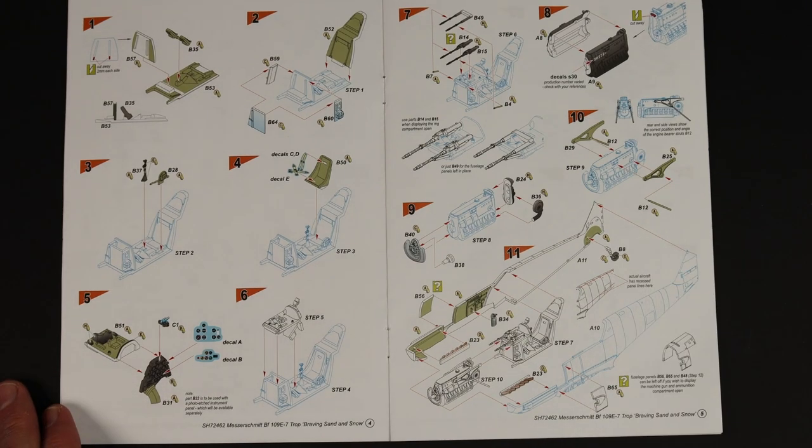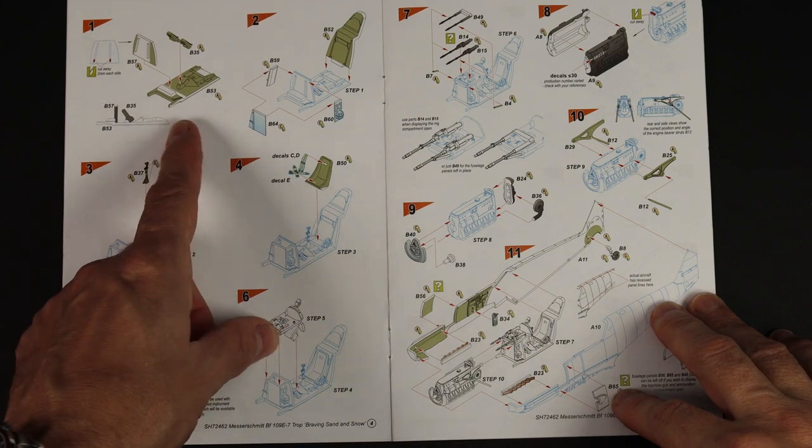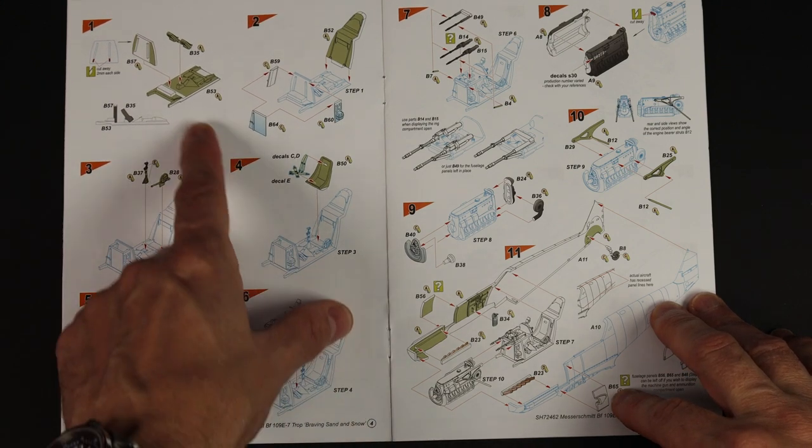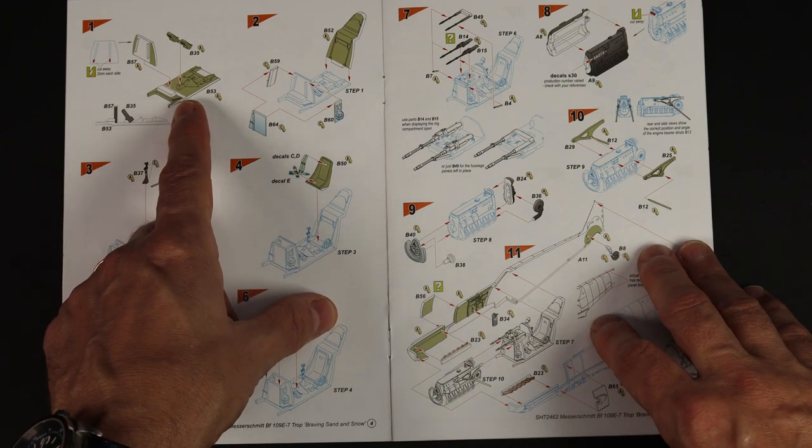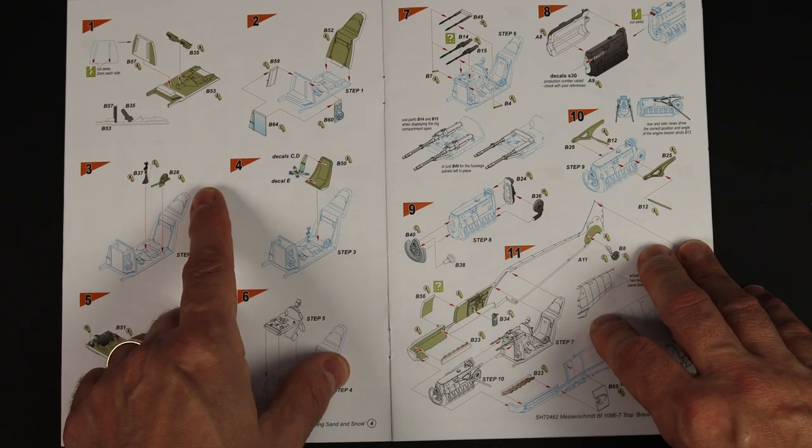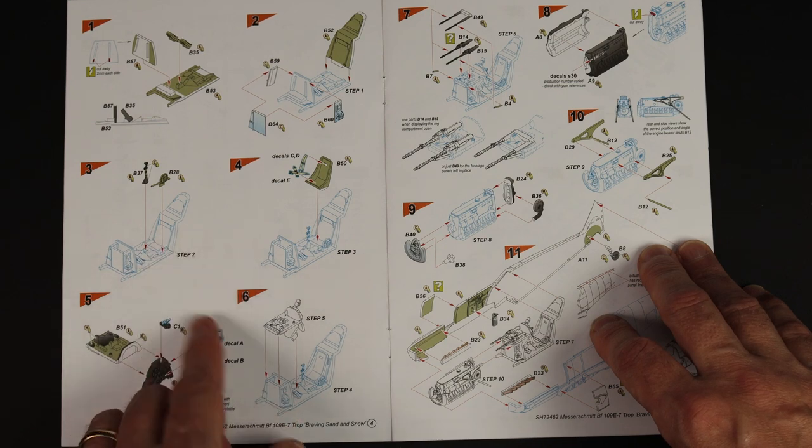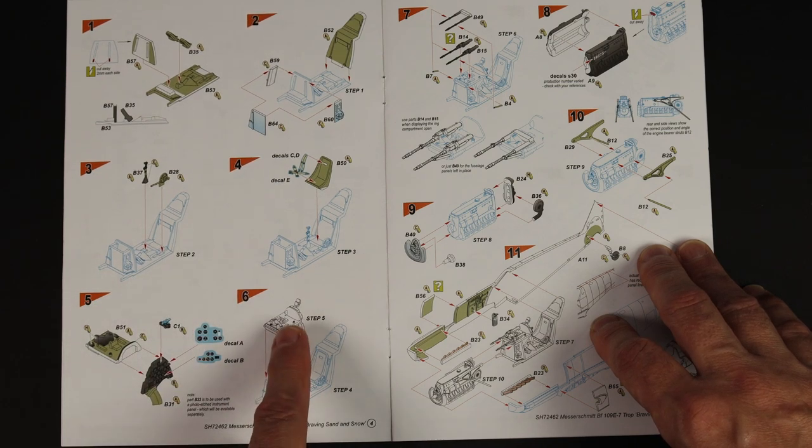Then straight into it. The first thing that strikes me are the color callouts. It's all printed in full color and I'm assuming these are the new bits. Everything that's new is colored, everything that you've already done is in outline, so that's awesome.